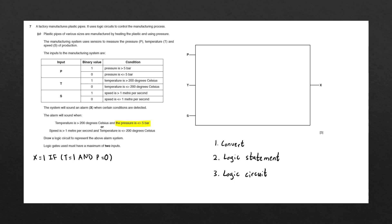We're going to write down the OR gate. On a new line, we open up a new set of brackets and apply the same rules. The first statement says speed is greater than 1 meter per second. In our condition column, S is set to 1 when the speed is greater than 1 meter per second, so we're going to write when S is equal to 1. We then have the AND keyword, so we're going to write down AND. We have now successfully written the statement in terms of P, T, and S.